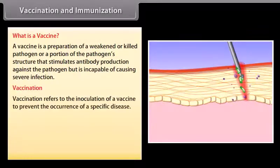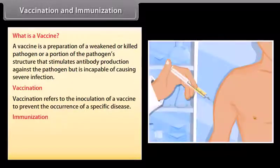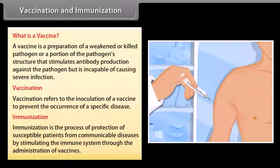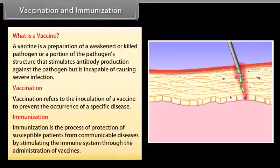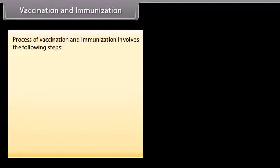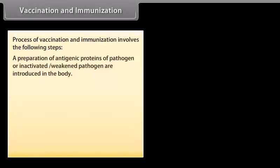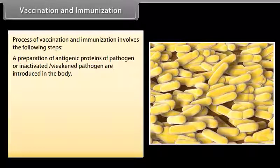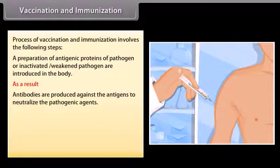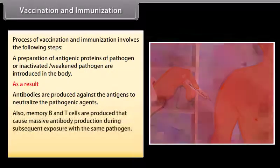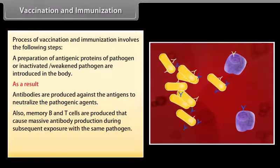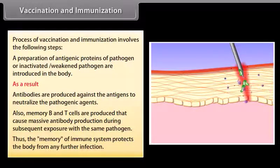Vaccination refers to the inoculation of a vaccine to prevent the occurrence of a specific disease. Immunization is the process of protection of susceptible patients from communicable diseases by stimulating the immune system through the administration of vaccines. The process involves introducing antigenic proteins or inactivated weakened pathogens into the body, causing antibodies to be produced against the antigens. Memory B and T cells are also produced, causing massive antibody production during subsequent exposure, thus protecting the body from further infection.